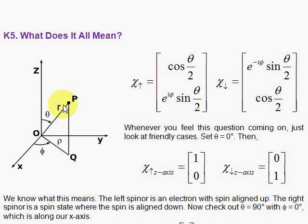So here we have a direction defined along this R, and that is theta with respect to the z-axis and phi with respect to the x-axis, and these are the spin-up and spin-down eigenstates for that direction. How do we understand what this means? Well, you consider easy cases. Whenever this happens in physics or mathematics, you pick easy cases, limiting cases.